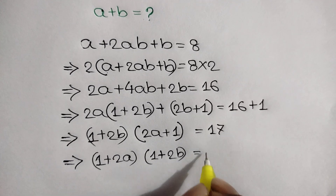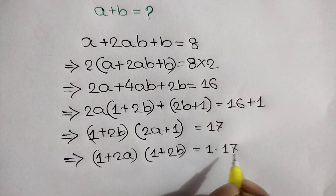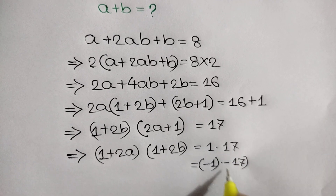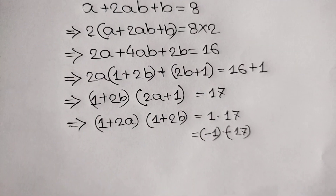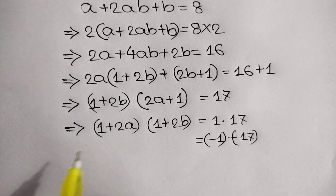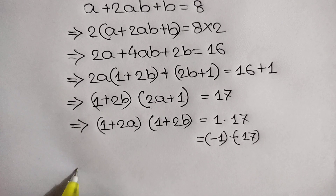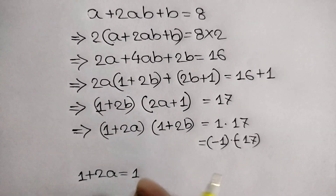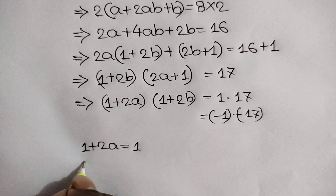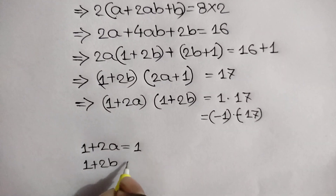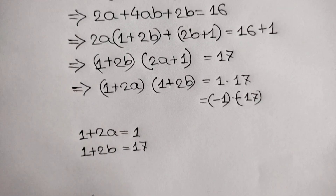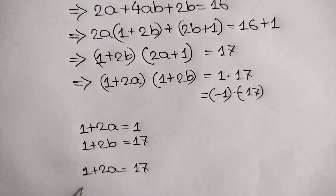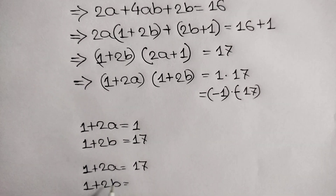We can write (1 plus 2a)(1 plus 2b) equals 17 as factor pairs: 1 times 17, or negative 1 times negative 17. Comparing left and right sides, for the first case: 1 plus 2a equals 1 and 1 plus 2b equals 17, or 1 plus 2a equals 17 and 1 plus 2b equals 1.